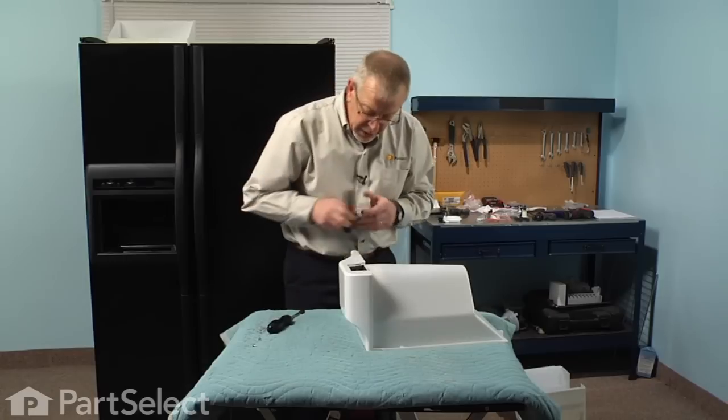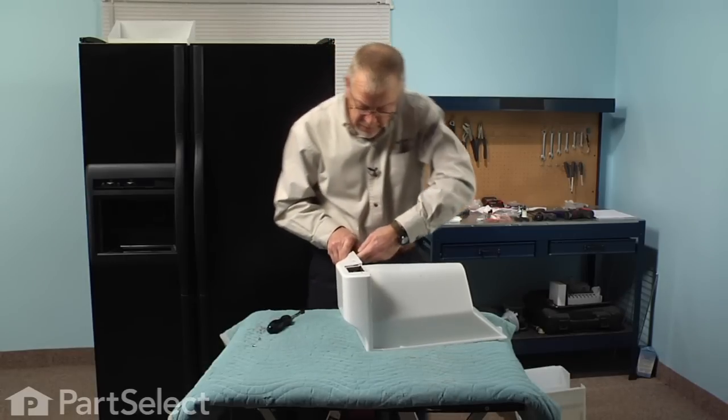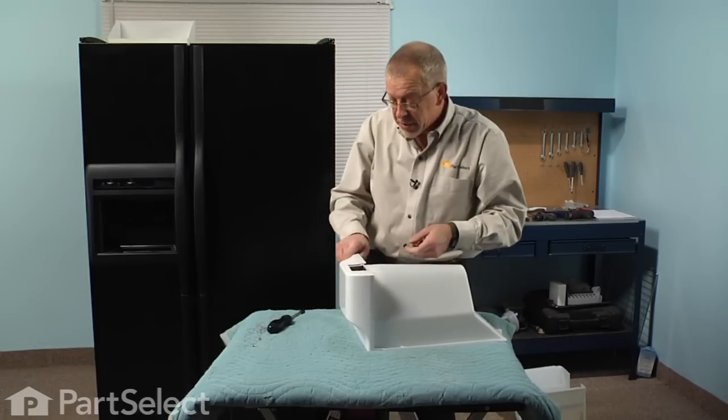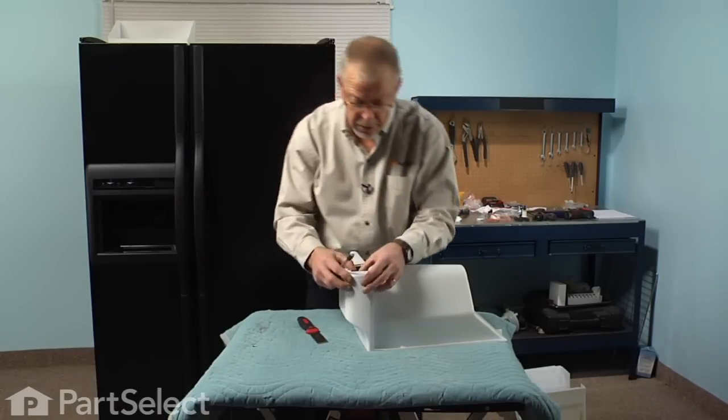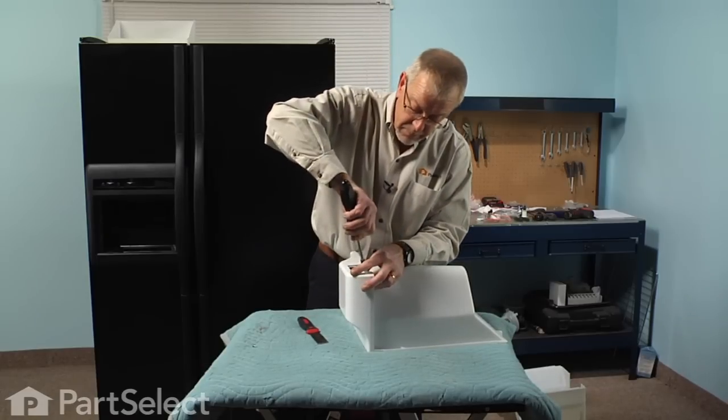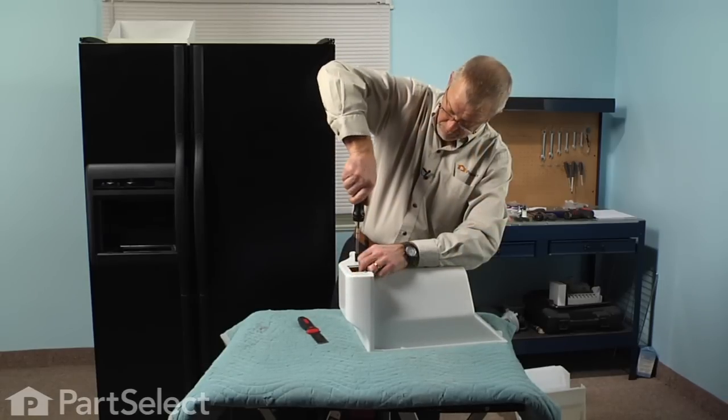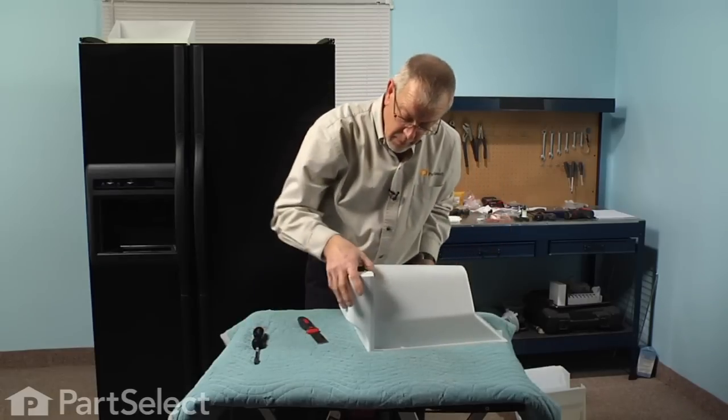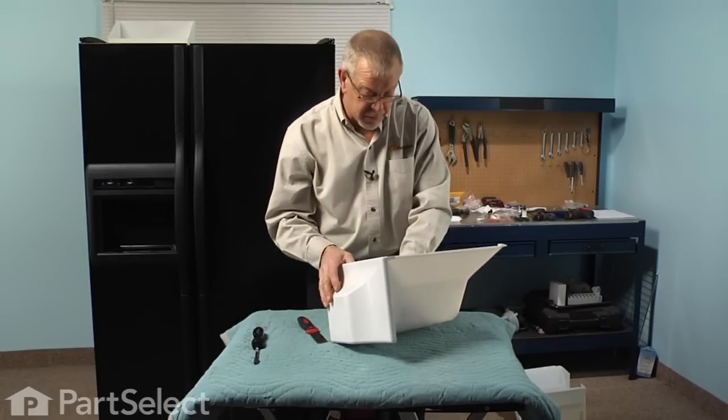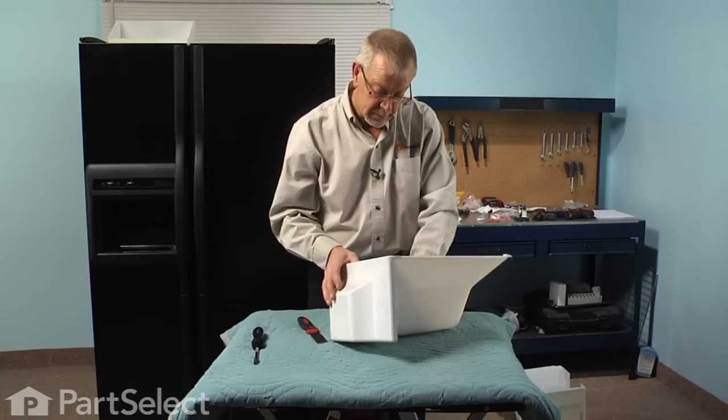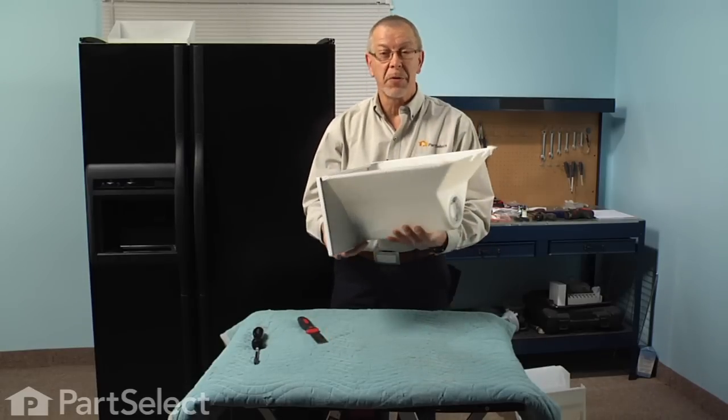With our putty knife, we'll just work that left side into place. We're ready to reinstall the two screws that secure it. Check the operation of the auger to make sure it still turns freely. Now we're ready to reinstall it in the refrigerator.